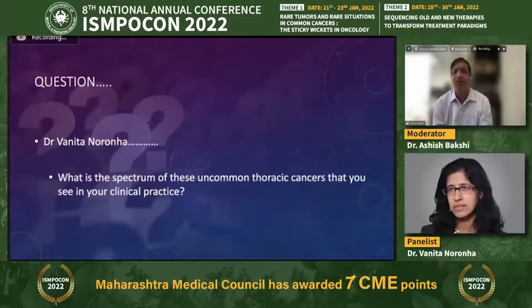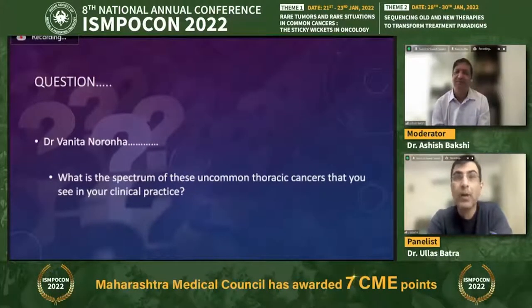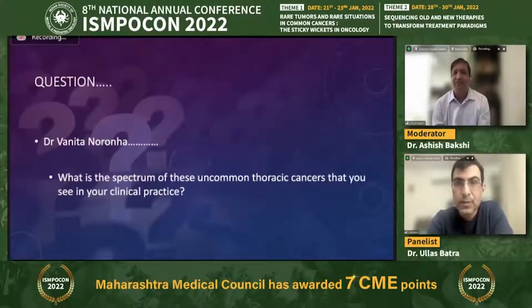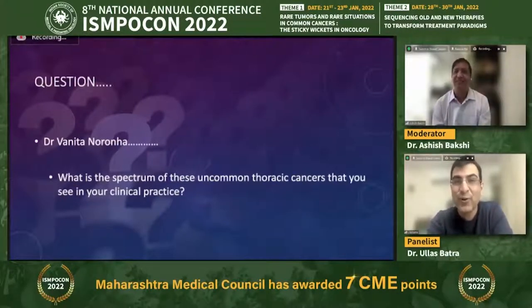From Ullas's experience, thymoma and thymic carcinomas are the more common among rare tumors. Mediastinal germ cell tumors are seen occasionally. Mesothelioma is commoner than some others. Large cell neuroendocrine carcinoma, yes. Chondrosarcoma — the surgeons get those; they refer to us only for best supportive care or when they don't want to give chemotherapy.